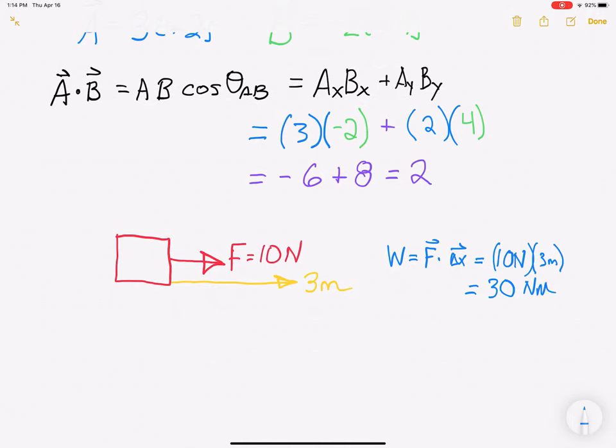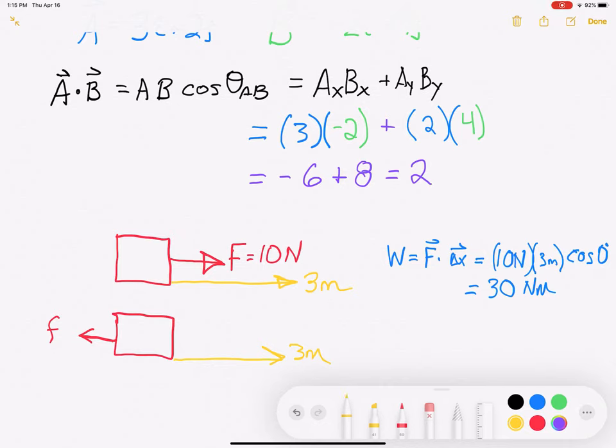Now, there are some subtleties in here. I totally ignored the cosine because I knew it was 0 degrees but let's take a place where that's not the case. Let's give the same box with a small backwards force and yet it's going to move forward 3 meters. So, let's give a value of that force, 4 Newtons.